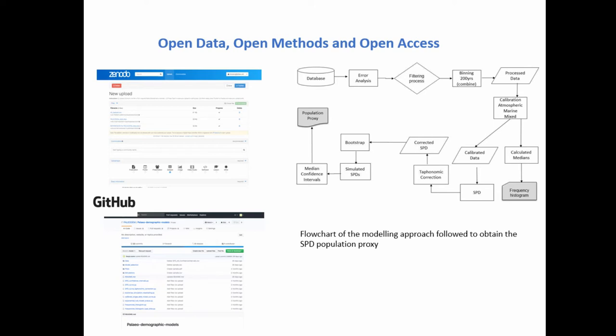In the paper you will find links to the Zenodo and GitHub repositories where you can get the data and scripts if you want to reproduce this yourself or try it with another dataset. This is the workflow we implemented in the analysis of the record in order to obtain the SPD population proxy.